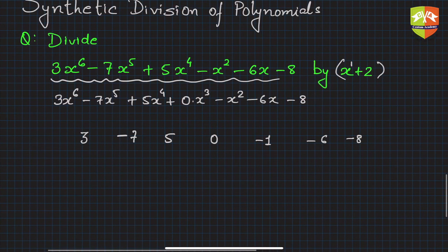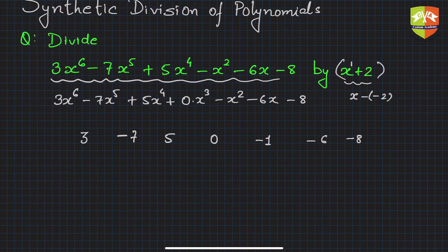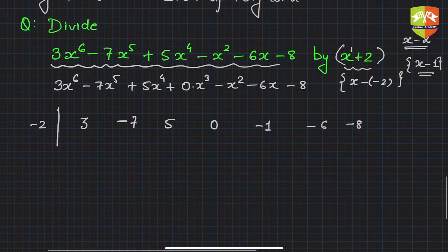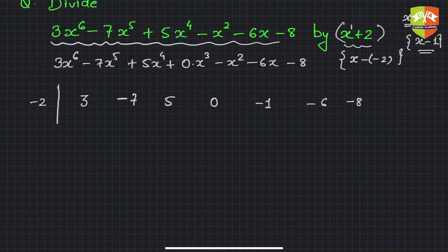Next, look at the divisor. Express x plus 2 in x-minus-alpha form, which gives x minus (-2). If the divisor were x minus 1, you would use 1 directly. Since it is x plus 2, we write x minus (-2), take -2, write it on the left, and draw a line. This is how you begin.